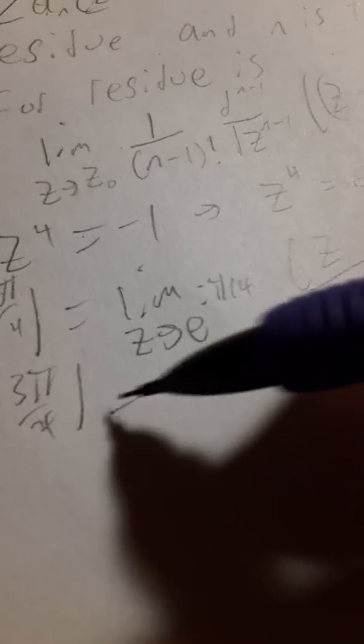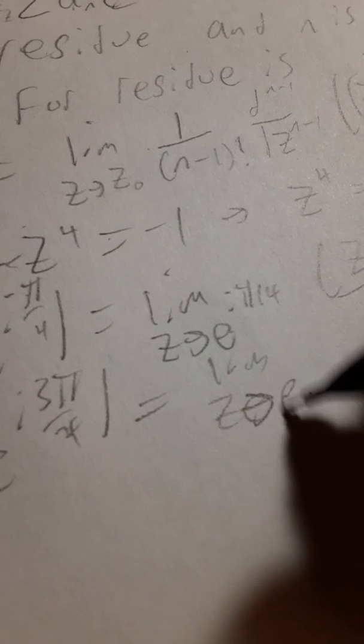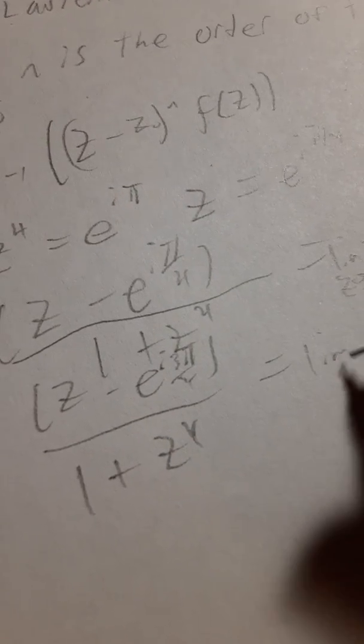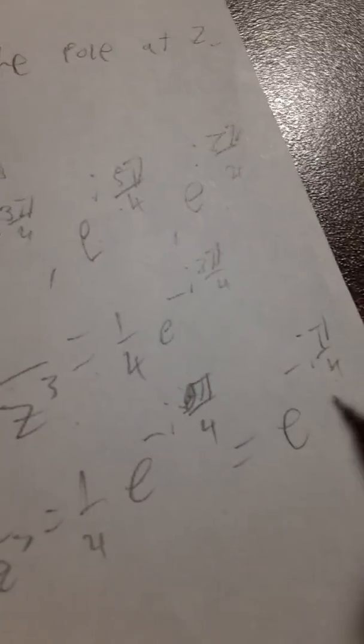The second residue at e to the i3π/4 follows the same process: take the limit as z approaches e to the i3π/4 of (z minus e to the i3π/4) over (1 plus z to the 4th), apply L'Hôpital's rule, and we get 1/(4z cubed) = 1/4 times e to the negative i9π/4. This equals 1/4 times e to the negative iπ/4, since adding 2π gives the same angle.